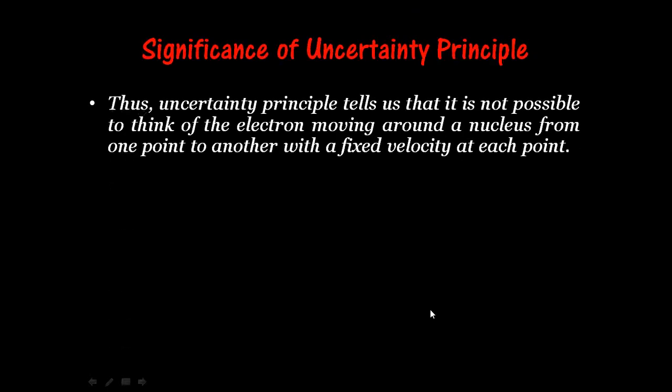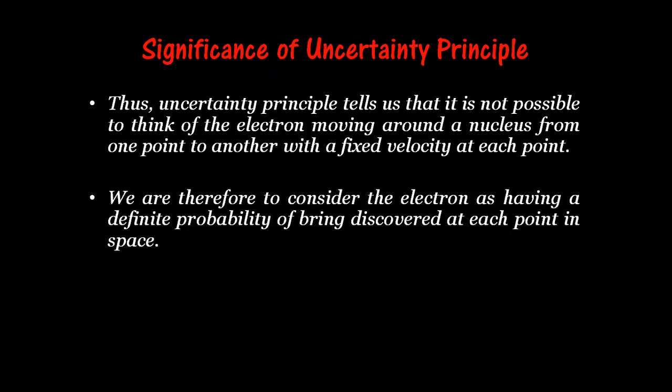The significance of the uncertainty principle is that it is not possible to think of an electron moving around a nucleus from one point to another with a fixed velocity at each point. We cannot determine the position and the velocity of a moving electron with entire certainty, so we cannot say that an electron moves in a fixed orbit with a fixed velocity. Therefore, we consider the electron as having a definite probability of being discovered at each point in space — a chance of being discovered at each point in space.